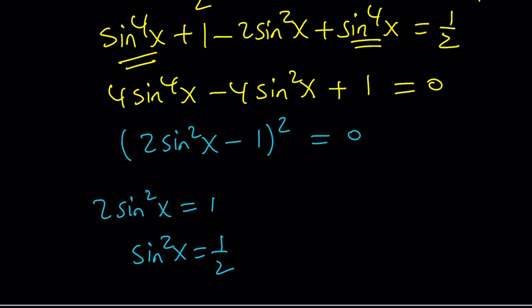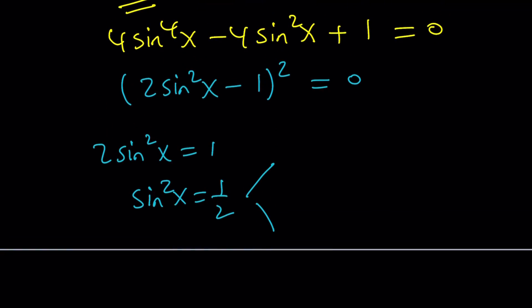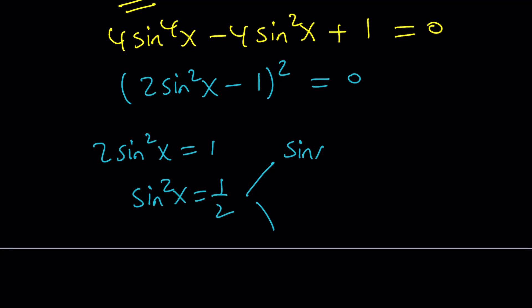This means that two sine squared x is equal to one or sine squared x is equal to one half. Now, both of these solutions should be valid. There are two numbers whose square equals one half. Those numbers are one over square root of two and negative one over square root of two. And this pretty much gives you all the multiples of pi over four as before. Make sense? I hope it does.